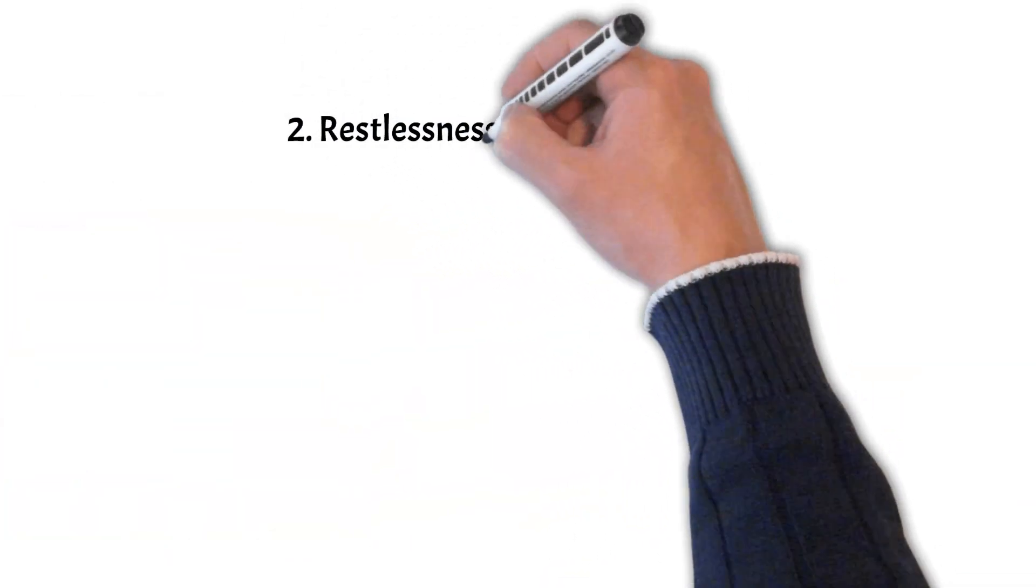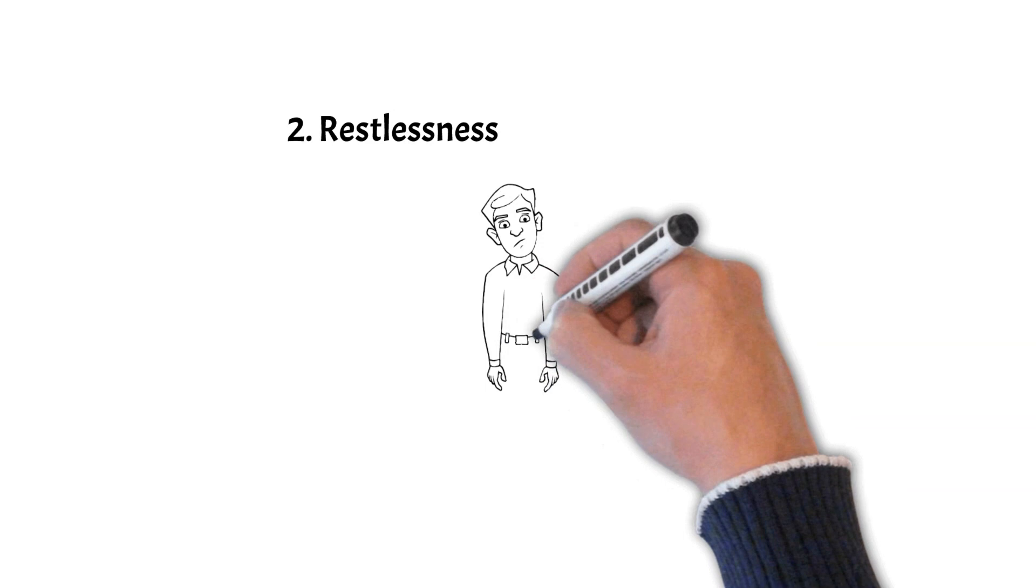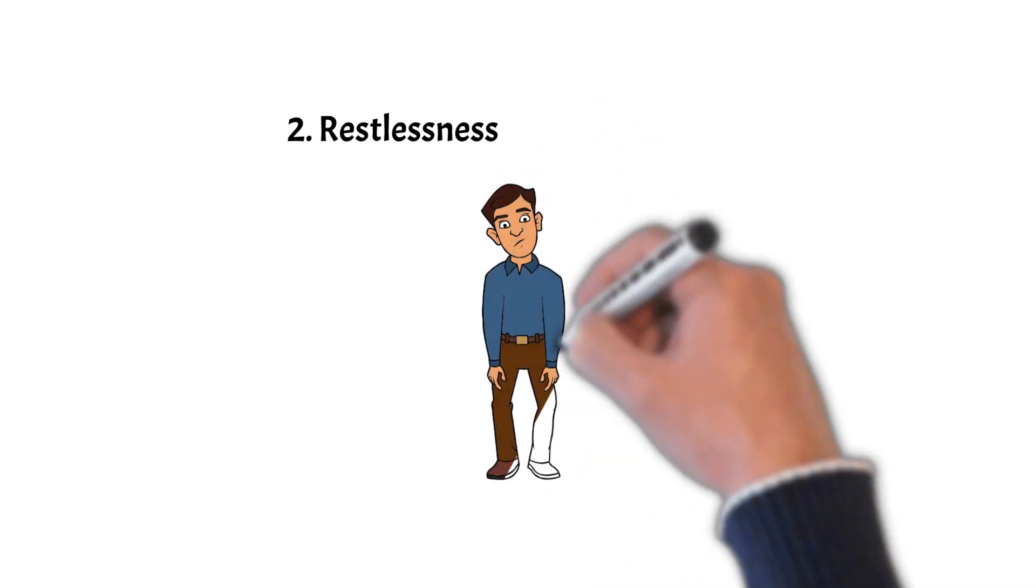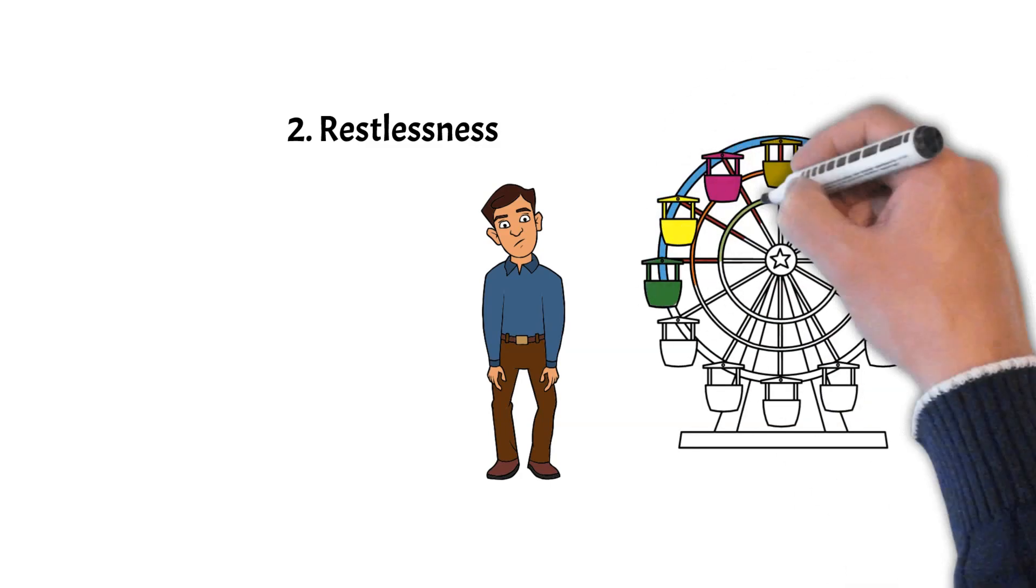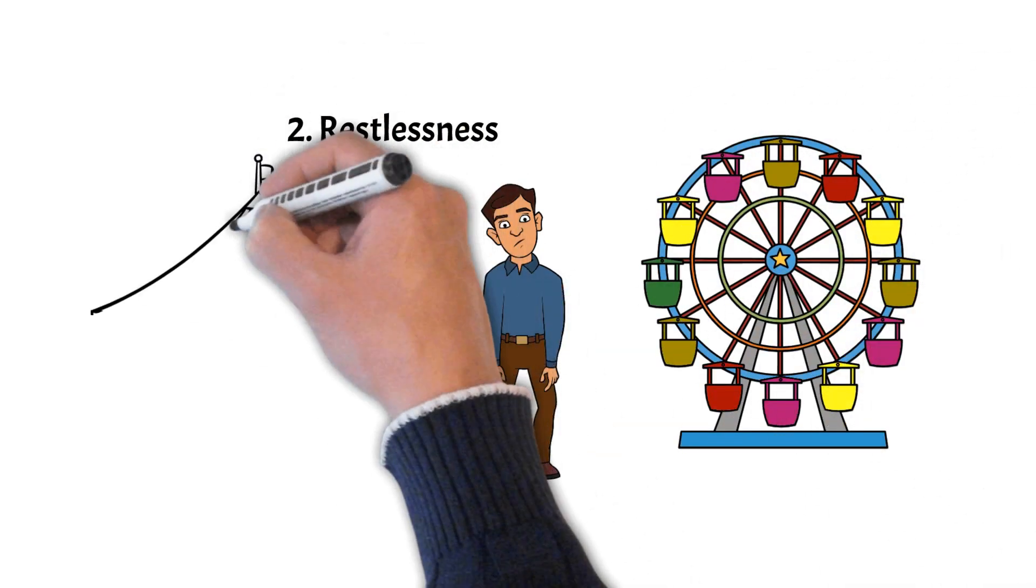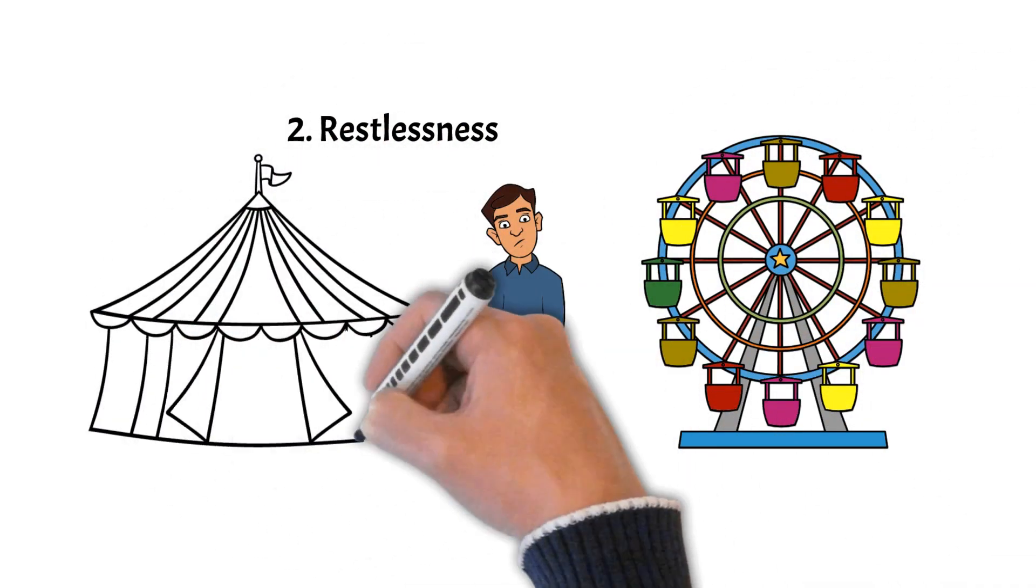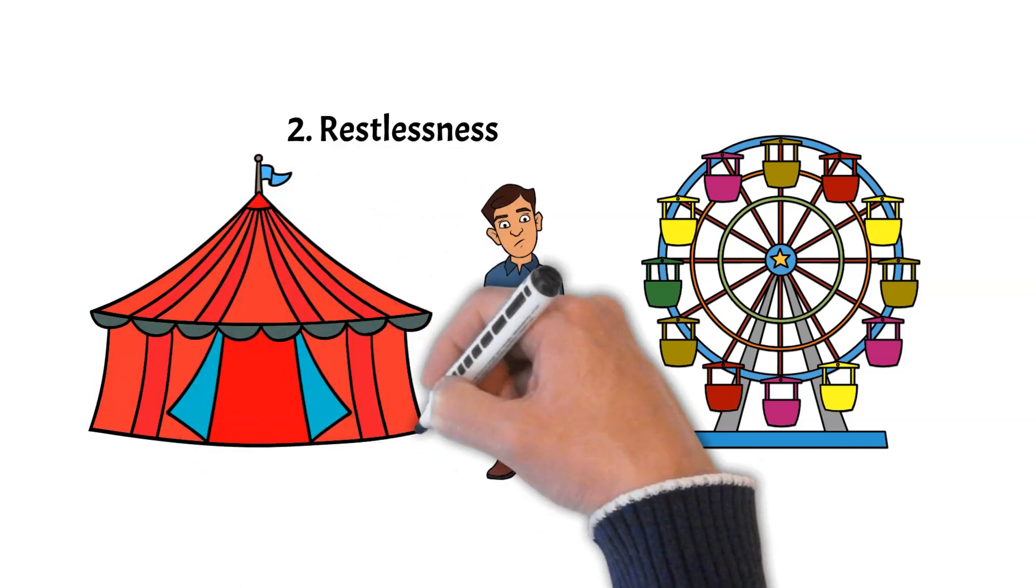2. A sense of restlessness. 7s' desire for new experiences and adventures can make them seem restless or inconsistent, leading others to wish they would just settle down or commit more fully to one thing at a time.